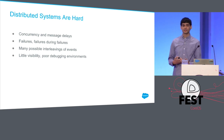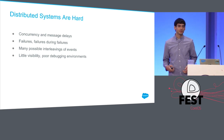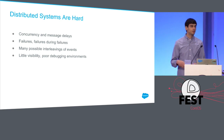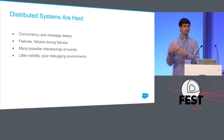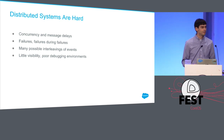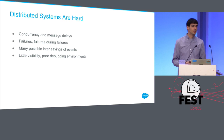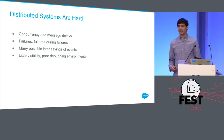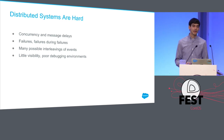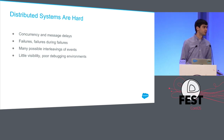Together this causes many possible interleavings of events, where it's really hard to say 'I'm going to do this and then that' — a whole bunch of other stuff could happen in between. And we tend to have little visibility into our running distributed systems and poor debugging environments to understand what's going wrong.